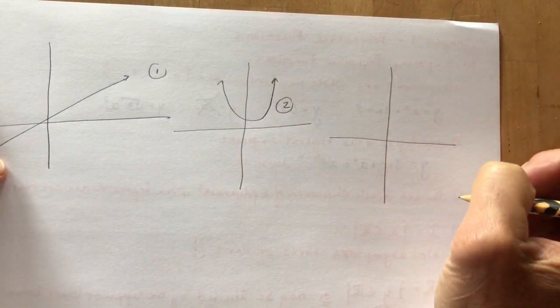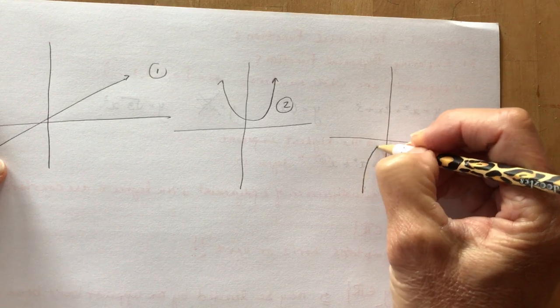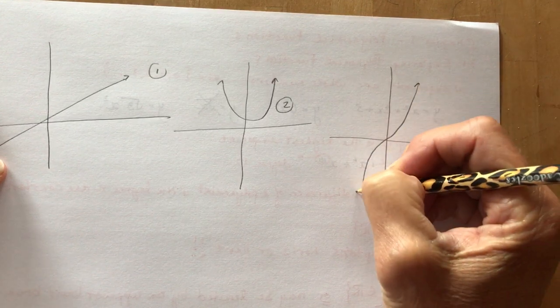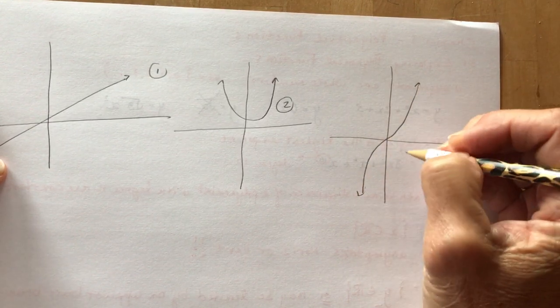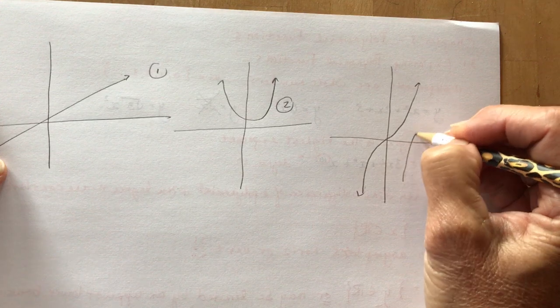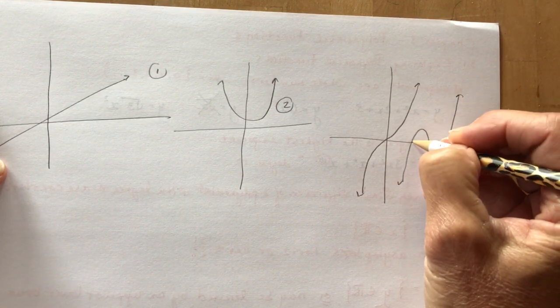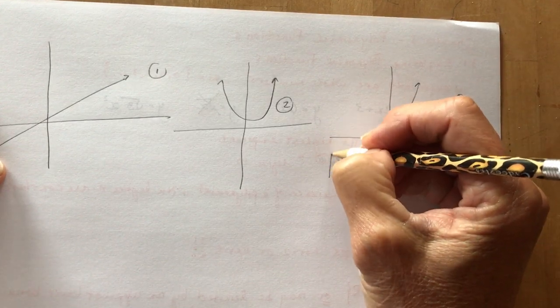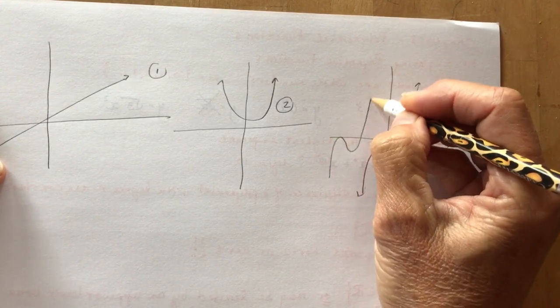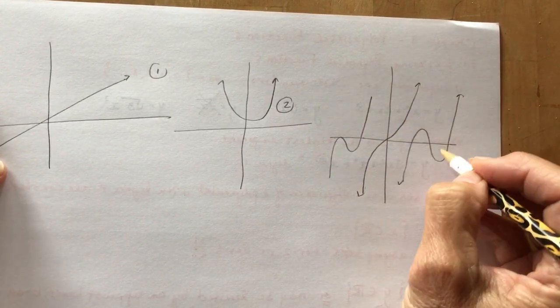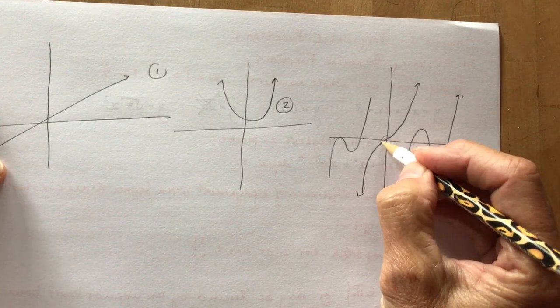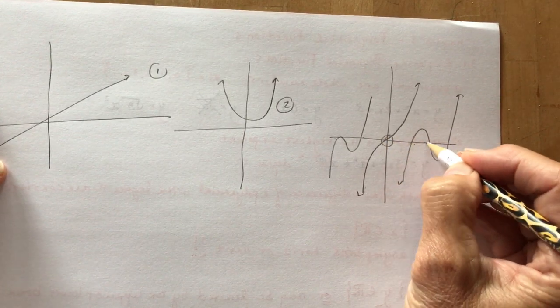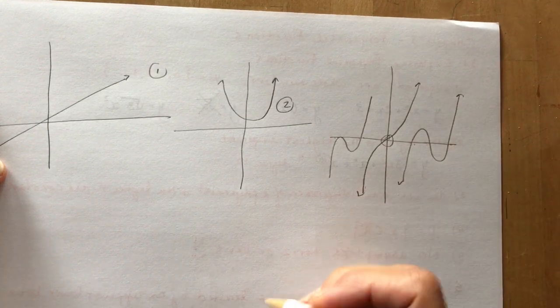Three is a cubic function. And they can go like this. So they have a triple root. Or they can go like this. So it crosses one, two, three times. Or I could just go touch here and then go through. So it's a double and a single. So they have three possible roots. Triple root. Three single roots. A double root and a single root.